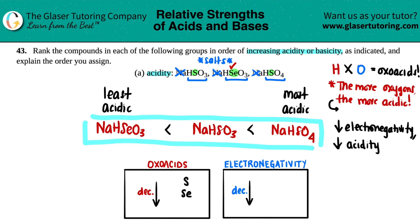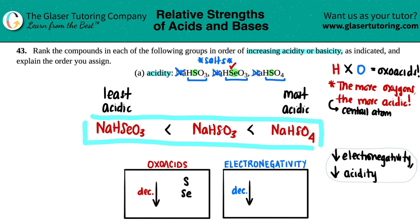Between these, the more oxygens, the more acidic. This is because for that central element, the central atom will also have a bigger formal charge. And the greater the formal charge, the more acidic.